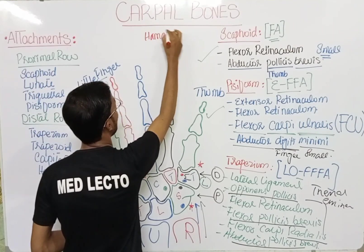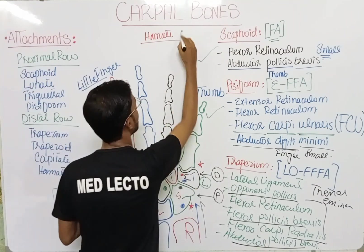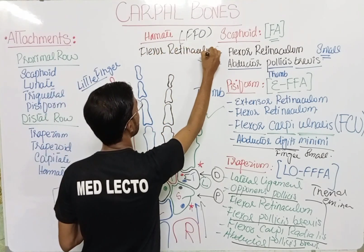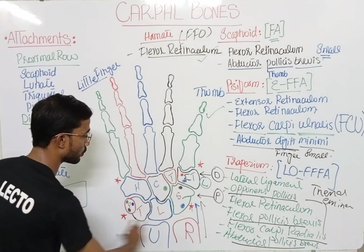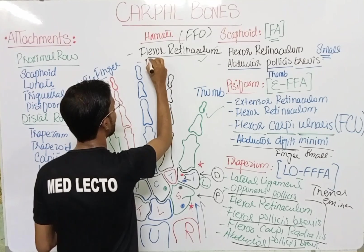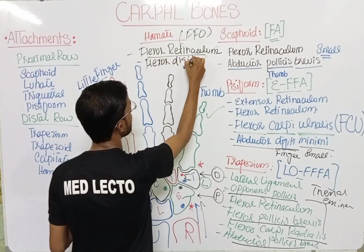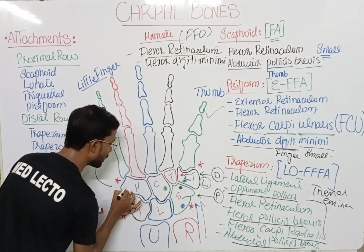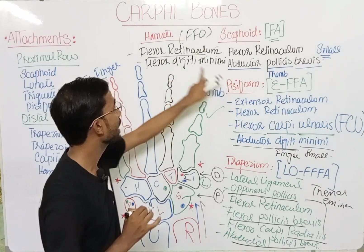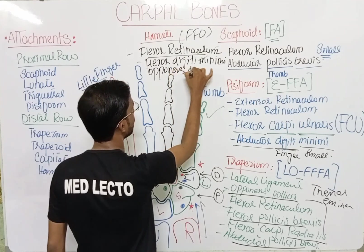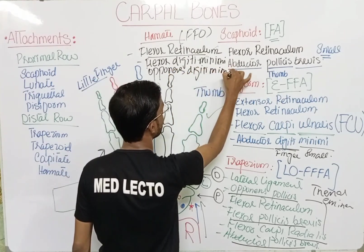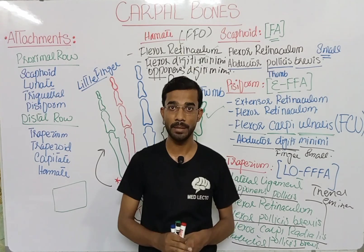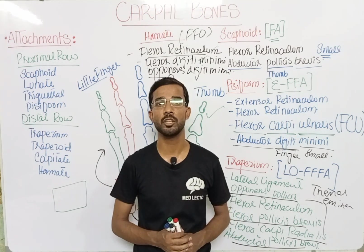The last corner is the hamate bone, remembered with the mnemonic FO. F stands for flexor retinaculum, which attaches to all four corners of the wrist including the hamate. O stands for opponens digiti minimi, which is another muscle that attaches to the hamate. So these are basically the different attachments of the carpal bones. If you have any questions, you may ask in the comment section. Thank you so much.